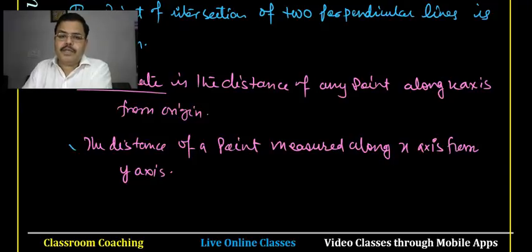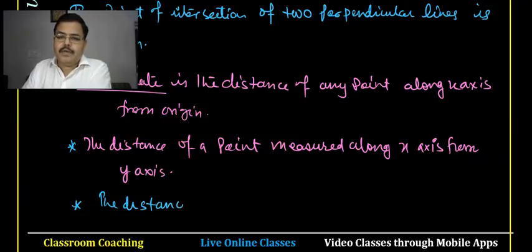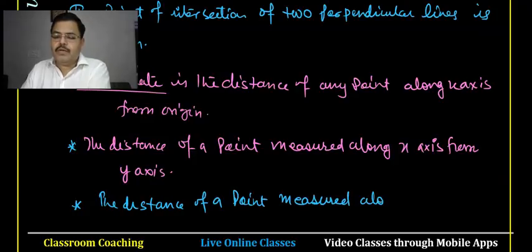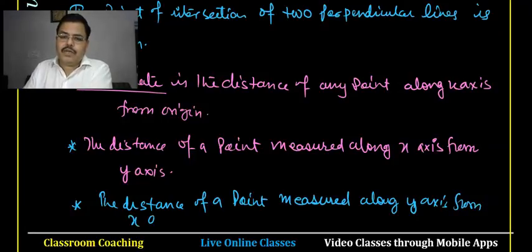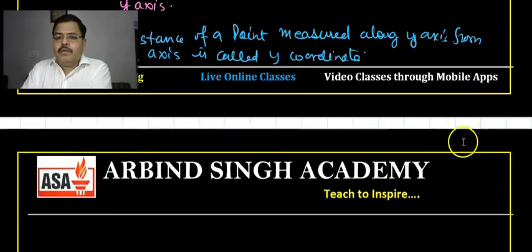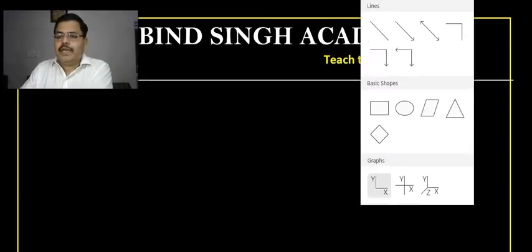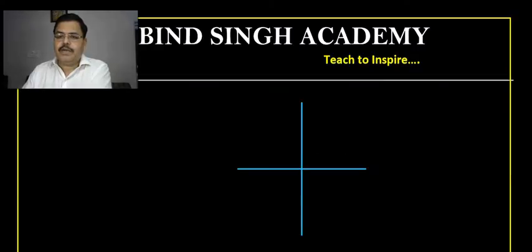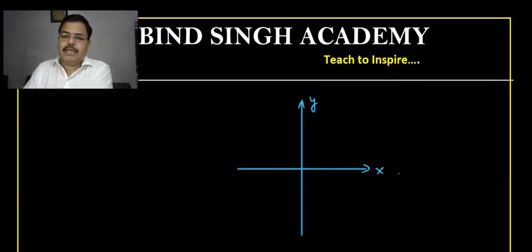In a Cartesian system, if I draw two perpendicular lines — one is the x-axis and the other is the y-axis — the whole plane is divided into four parts. These parts are called quadrants. The first quadrant is in the upper right, the second quadrant in the upper left, the third quadrant in the lower left, and the fourth quadrant in the lower right.